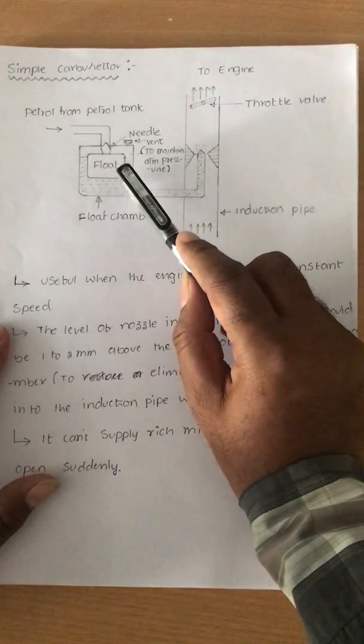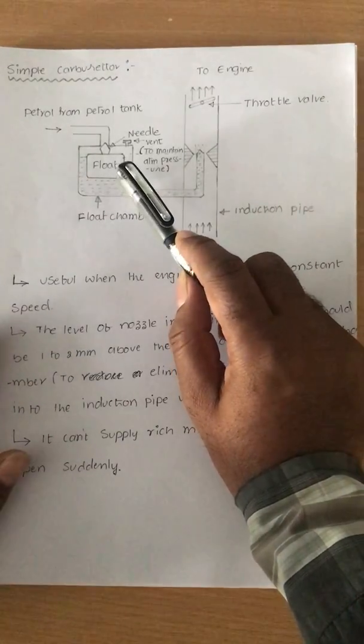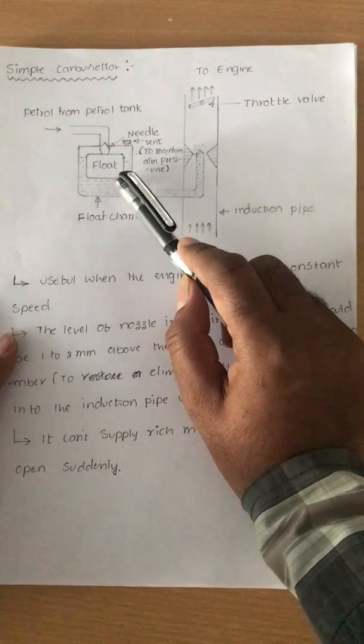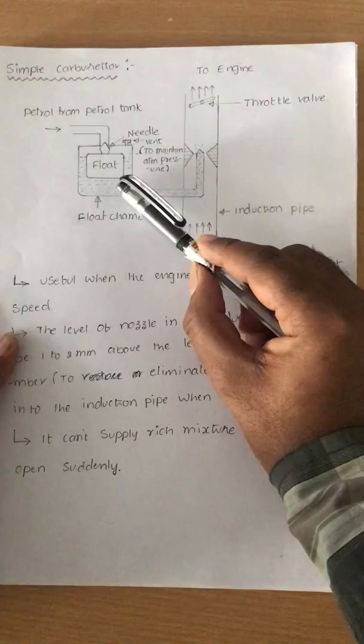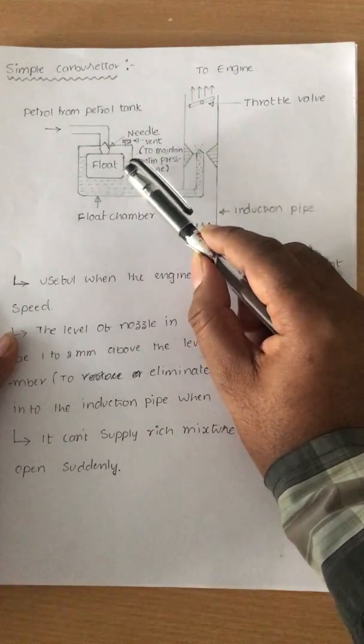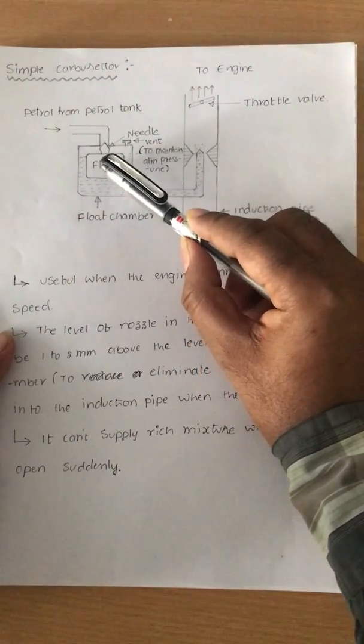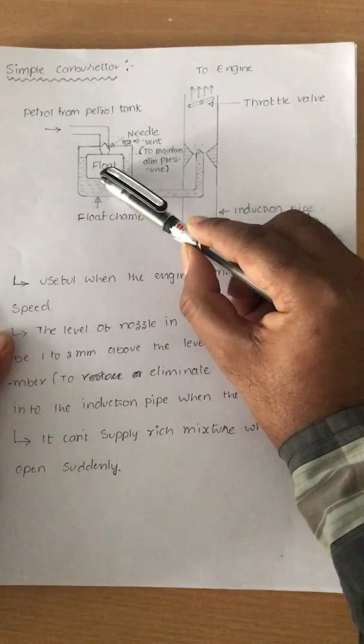We have to maintain a certain fuel level in the float chamber. When we use fuel from the float chamber, the level is reduced. The float floats on the fuel, so when the level is reduced, the float comes down.